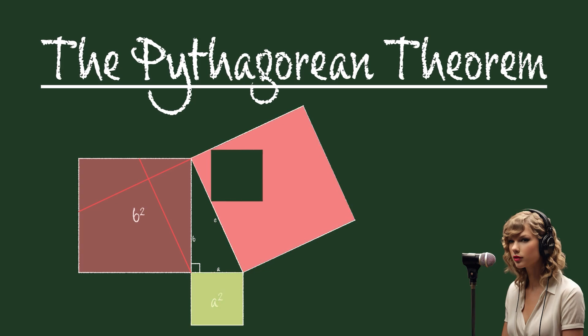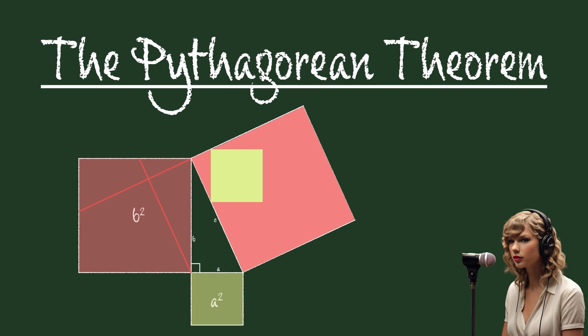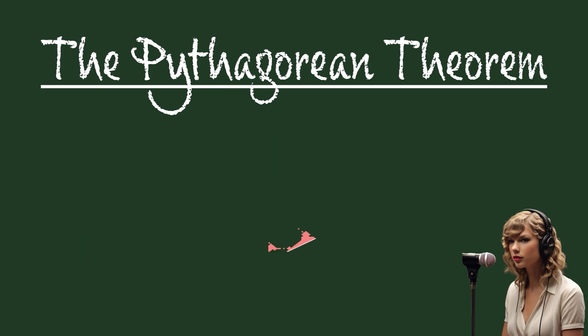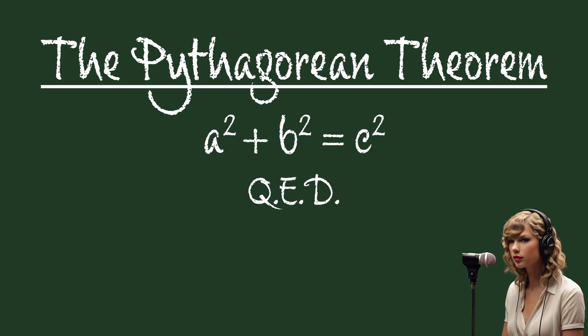Notice that the small square fits perfectly. Voila! Now, we can see that the area of the larger square is equal to the sum of the areas of the two smaller squares, proving the Pythagorean theorem. Hence, A squared plus B squared equals C squared. QED. Thanks for watching, have a great day, and I'll see you next time.